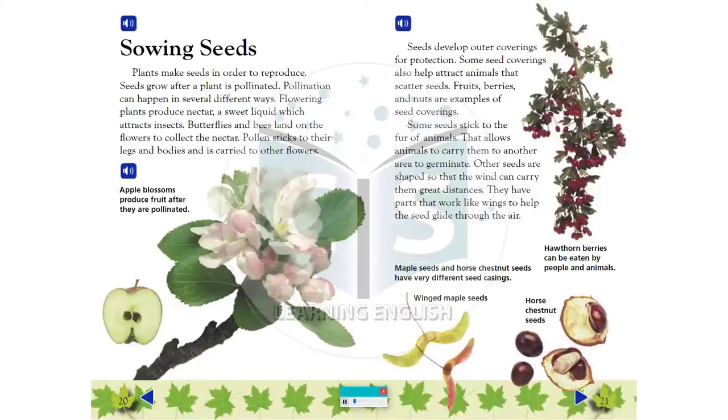Seeds develop outer coverings for protection. Some seed coverings also help attract animals that scatter seeds. Fruits, berries and nuts are examples of seed coverings.